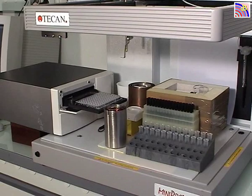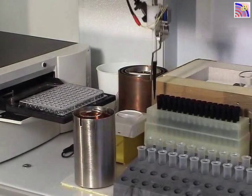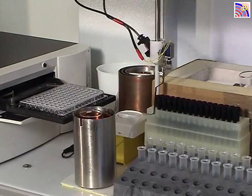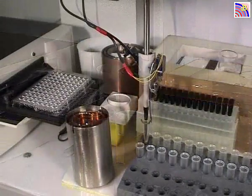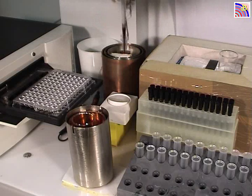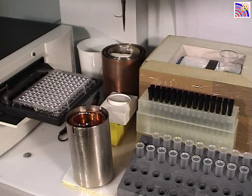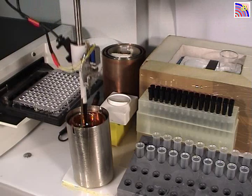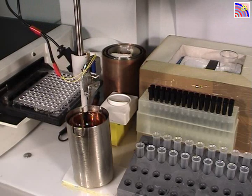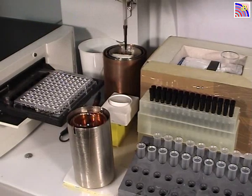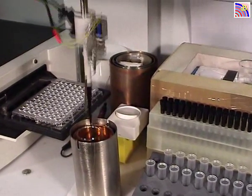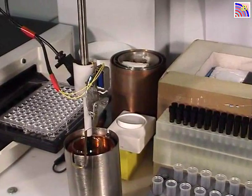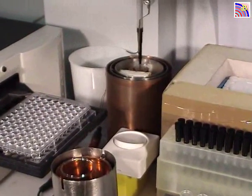Now the machine is working. It is picking up a tip, then will take an empty tube and put it into the coil. Then water is added to this tube, and then a second time, a second aliquot of water is added to the tube.